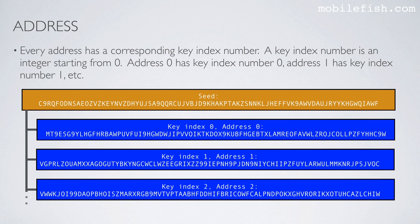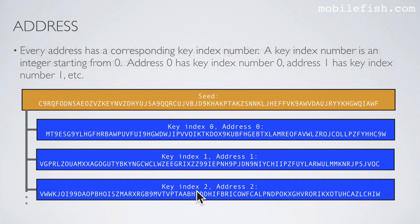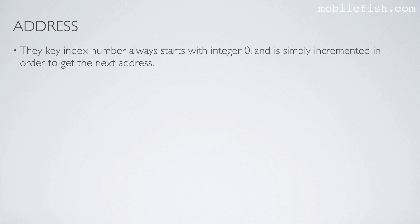Every address has a corresponding key index number. A key index number is an integer starting from 0. Address 0 has key index number 0, address 1 has key index number 1, and so on. The key index number always starts with integer 0 and is simply incremented in order to get the next address.